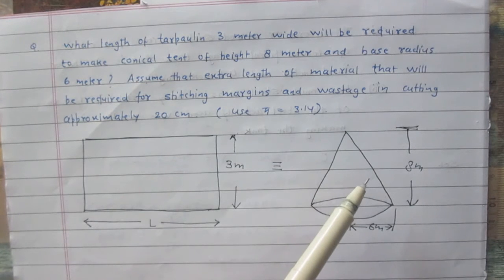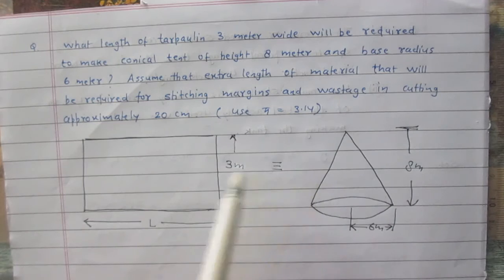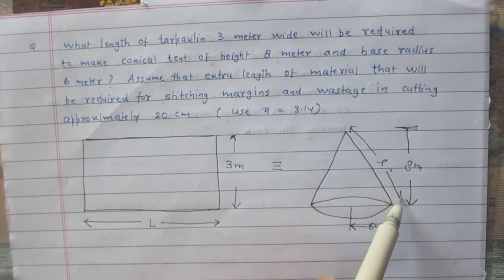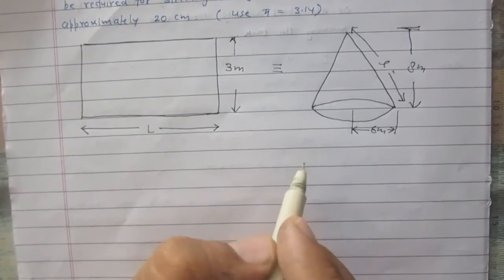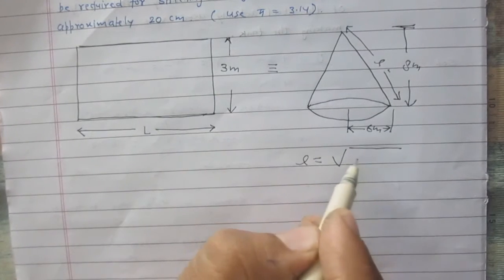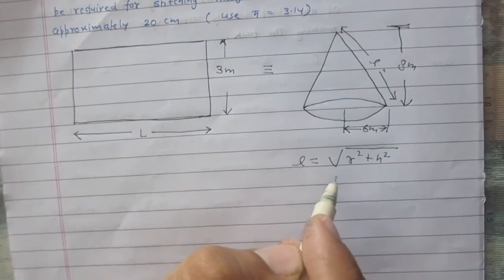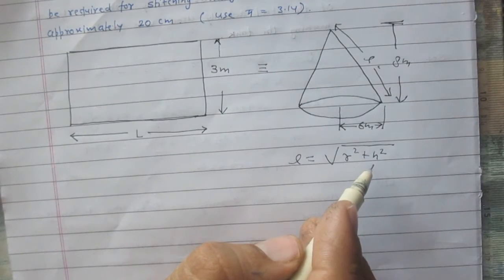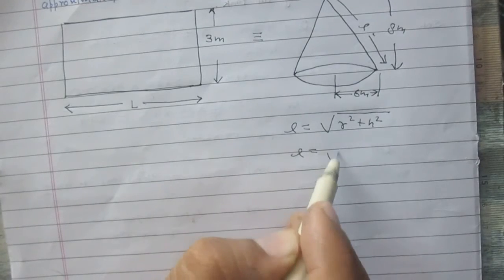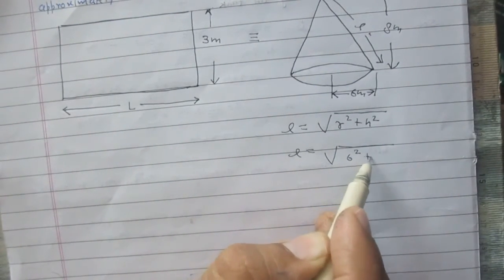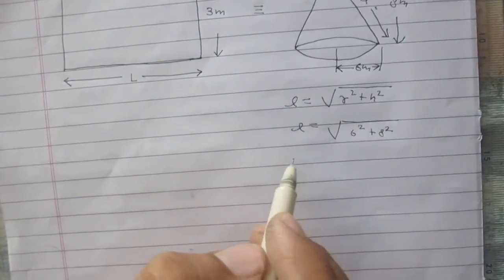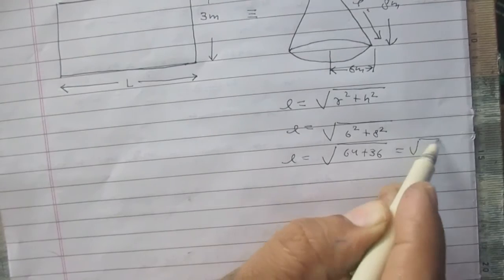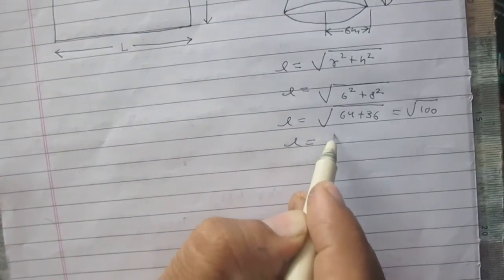In order to find the curved surface area, we need to calculate the slant height of this cone. Let the letter l represent the slant height. According to the formula, slant height l equals the square root of r² + h², where r is the radius of the base and h is the height. Substituting the values: l = √(6² + 8²) = √(36 + 64) = √100 = 10 meters.